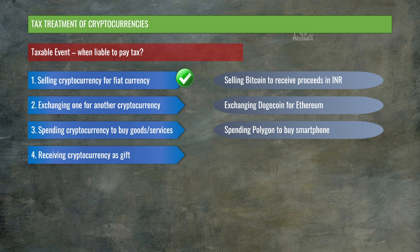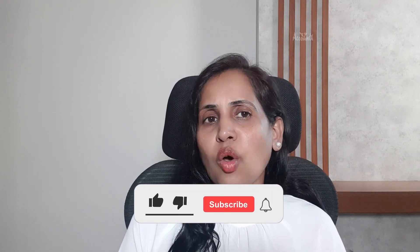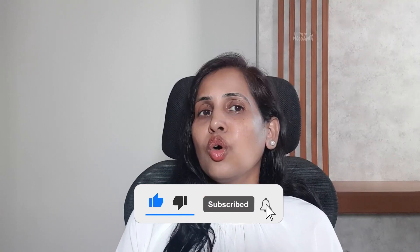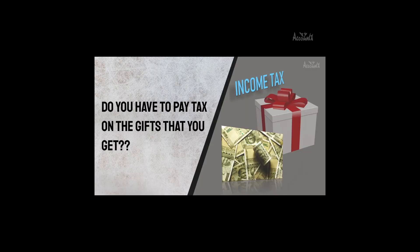Let's now talk about events 4, 5, and 6. Starting with the fourth one: receiving cryptocurrencies as gifts — say your friend gifts you Litecoin. In income tax law, such gifts are treated as movable properties. If the total value of gifts during a particular financial year is more than Rs. 50,000, then you are required to pay tax on the entire value. If the value is up to Rs. 50,000, you don't have to pay any tax. Also, if you get gifts from relatives, then you don't have to pay any tax.